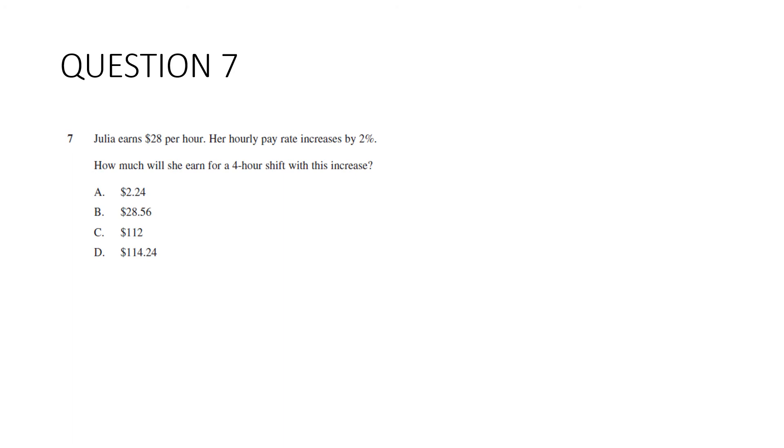Question seven. Julia earns $28 per hour. Her hourly pay rate increases by 2%. How much will she earn for a four hour shift with this increase? So all we've got to do here. It's a nice easy percentages question. Is increase this $28 by 2% and then multiply it by four. So this is the quick way of increasing by percentage. You can do it the long way if you want to. This is one plus 2%. If you do it the other way, you do 2% of 28 and then add the 28 on. But either way, you get $28 and 56 cents. And now we just need to multiply that by four. So our answer is D, $114 and 24 cents.